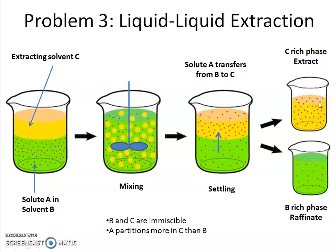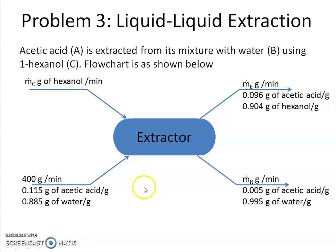Usually I choose a solvent C which has a very different volatility from solute A, so that I can take this mixture and use flash distillation or another type of distillation to separate A from C. That's how I can get pure A from a mixture of A and C, which was very difficult to obtain initially from a mixture of A and B. This is liquid-liquid extraction. Now for simplicity in this problem, I have given you a flowchart and I am asking you to calculate the unknown flow rates.